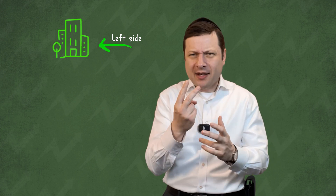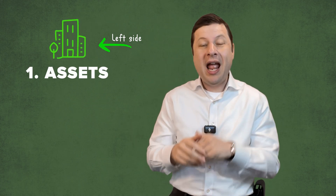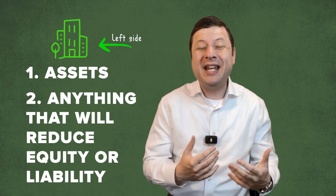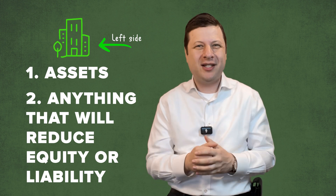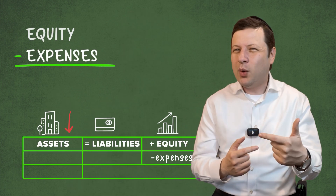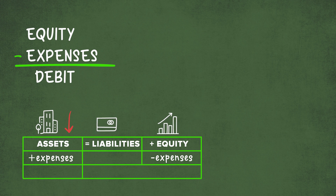What's on the left side? Two things. Number one: what you own — assets. And number two: anything that will reduce equity, like expenses and losses, or anything that will reduce a liability, like paying down the debt. So expenses reduce equity, which is why expenses are a debit on the left, reducing its natural position, which is equity on the right.